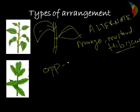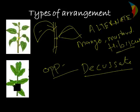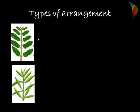Opposite phyllotaxy means when two leaves arise at a node but in opposite directions. This also contains two subtypes. The first is opposite decussate, where the leaves are in opposite directions but the arrangement of leaves on the top and bottom is different — they are in a twisted form.